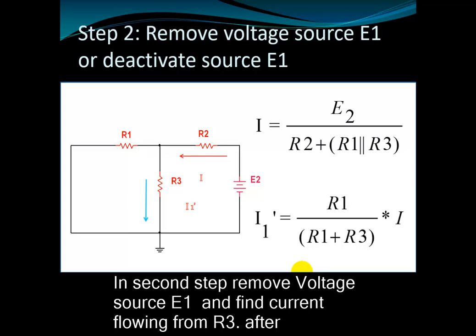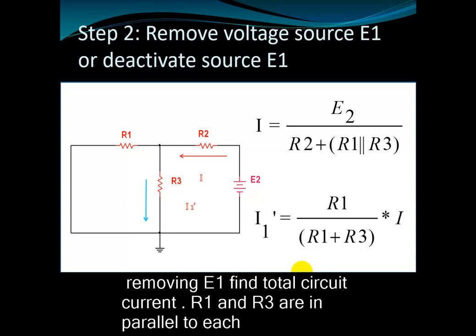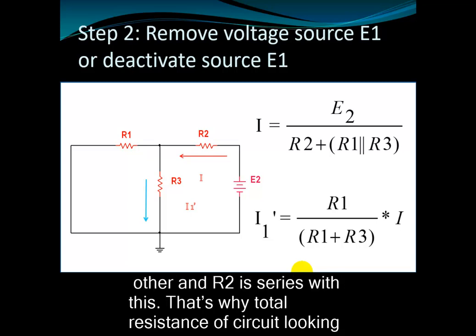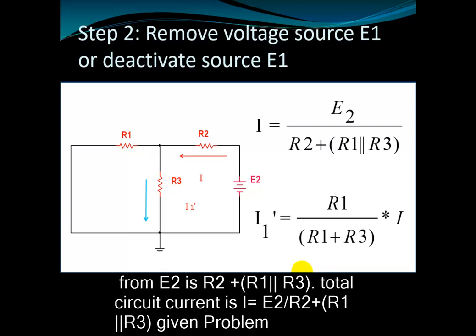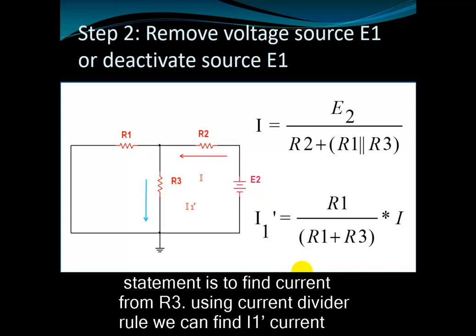Second step: remove voltage source E1 and find the current flowing through R3. After removing E1, find the total circuit current. R1 and R3 are in parallel to each other, and R2 is in series with this combination. That's why the total resistance of the circuit looking from E2 is R2 plus R1 parallel R3. Total circuit current I is equal to E2 divided by R2 plus R1 parallel R3.